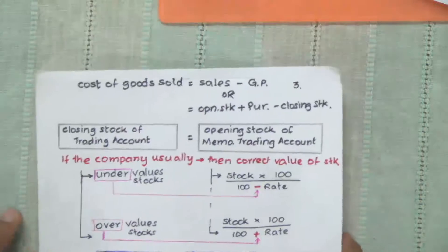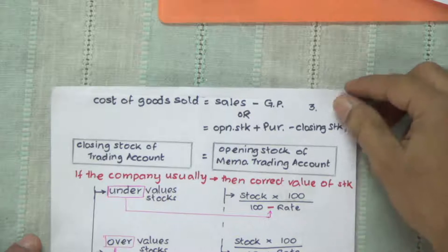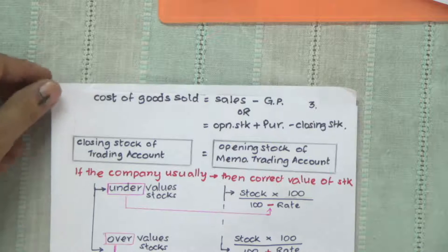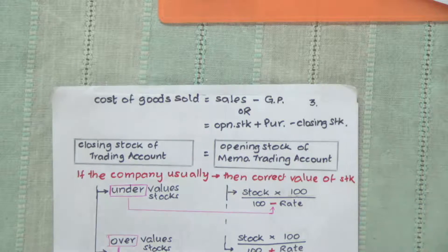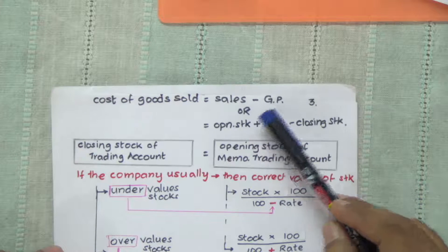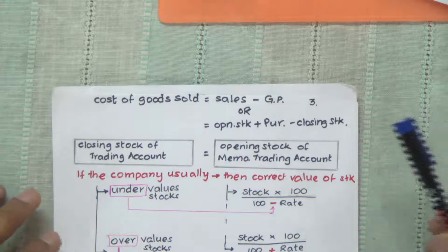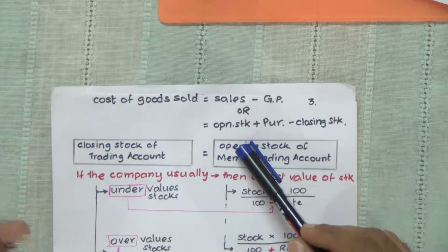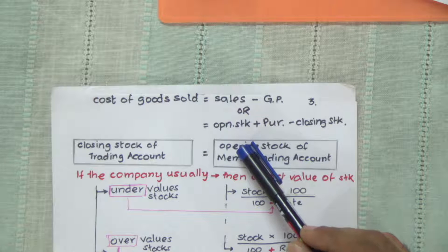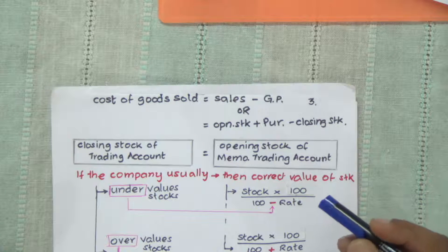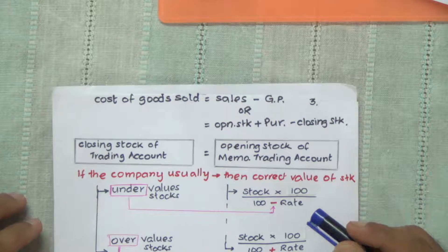Now let us get into the problem proper. Here I have a set of rules designed to help you work out problems in your syllabus. Cost of goods sold is sales minus GP, or in trading account format: opening stock plus purchases on the debit side, minus closing stock on the credit side. The balancing figure we get is cost of sales.